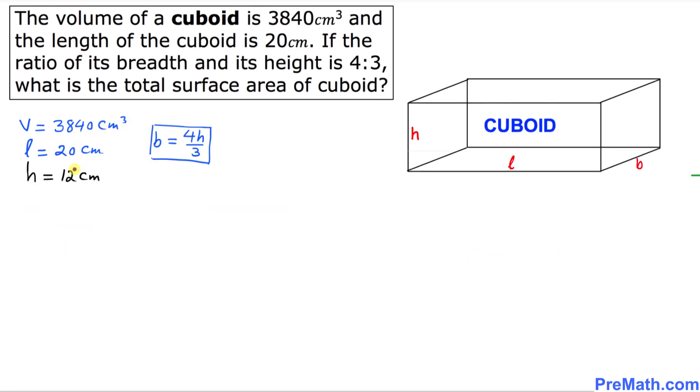So thus far we have figured out our height is 12 cm, and we know that b equals 4h over 3. If I replace this h by 12, then I can get the value of b. So b is going to be 4 over 3 and replace h by 12.